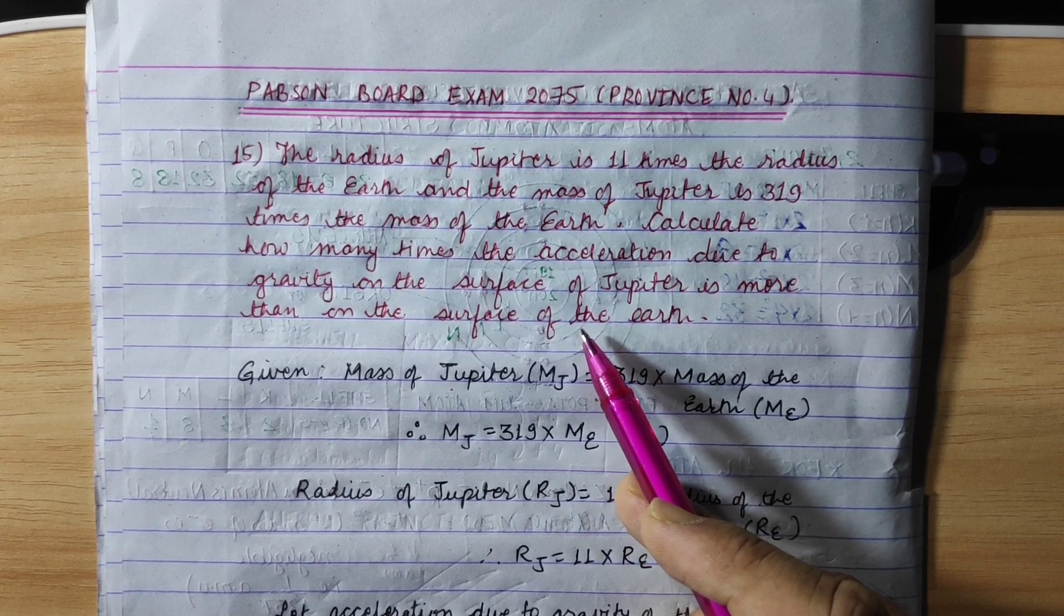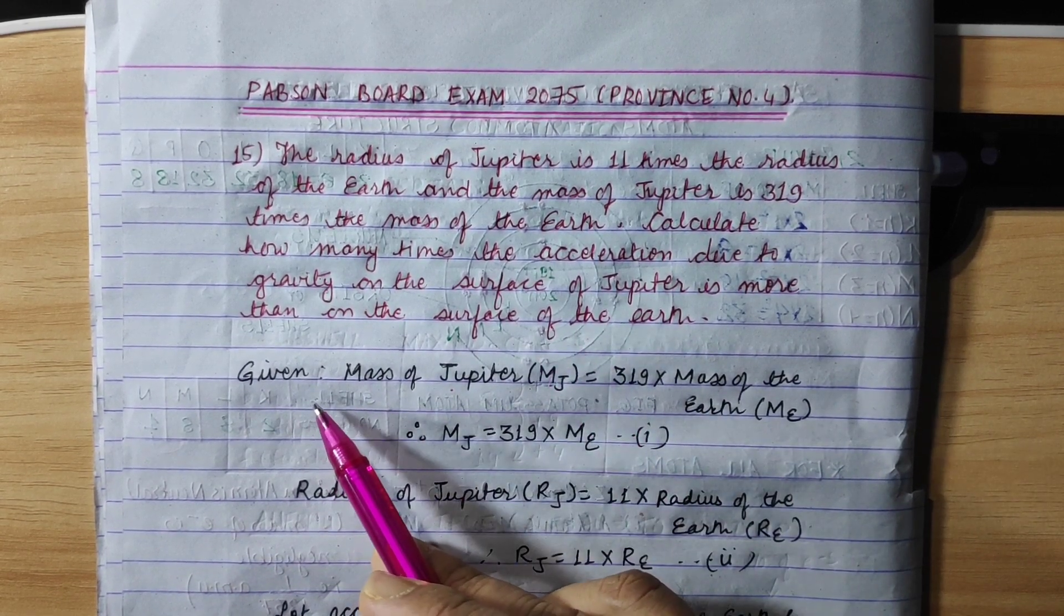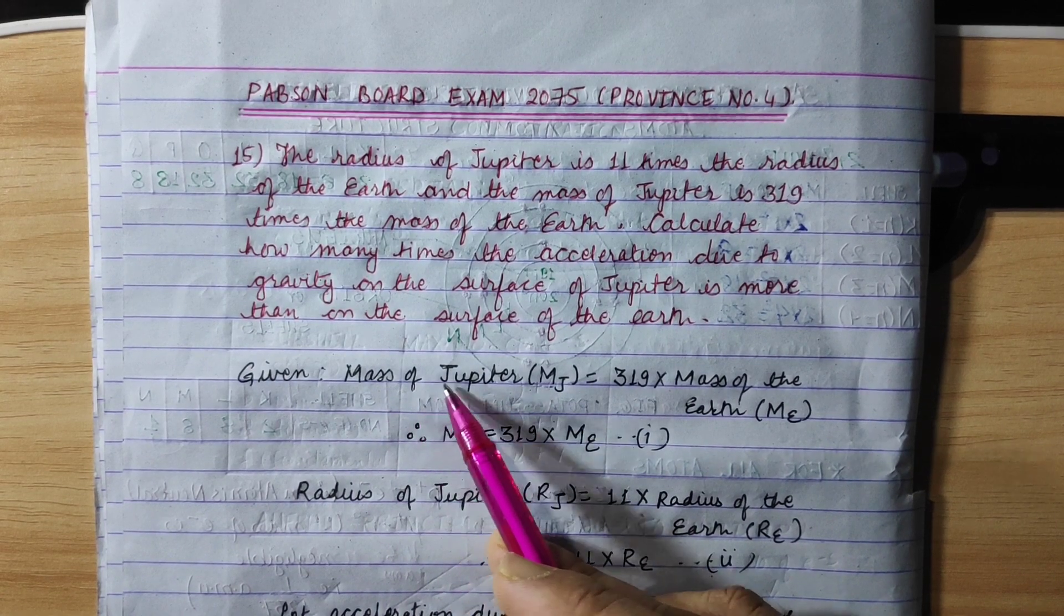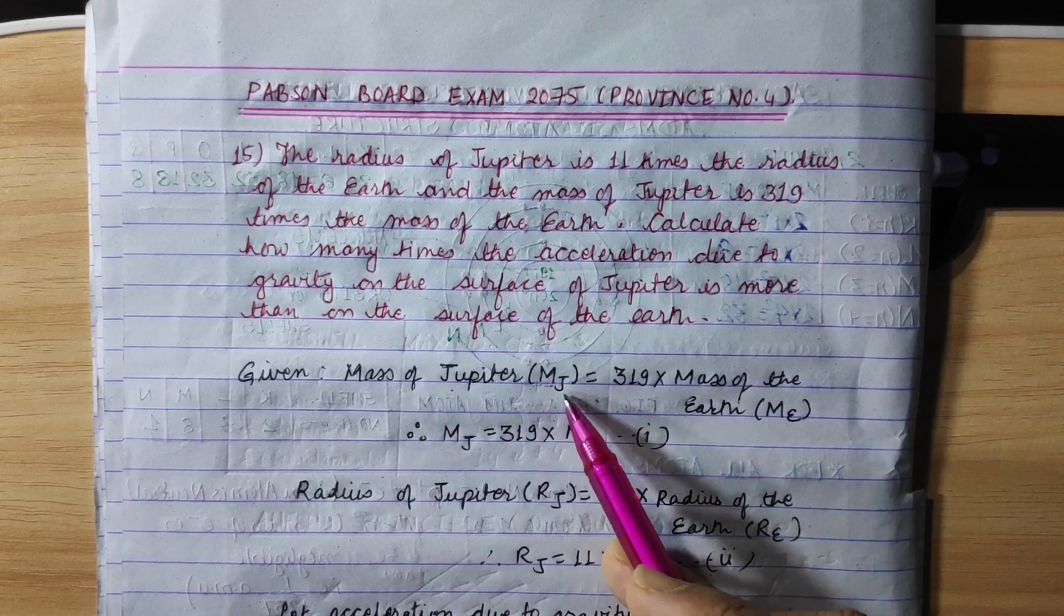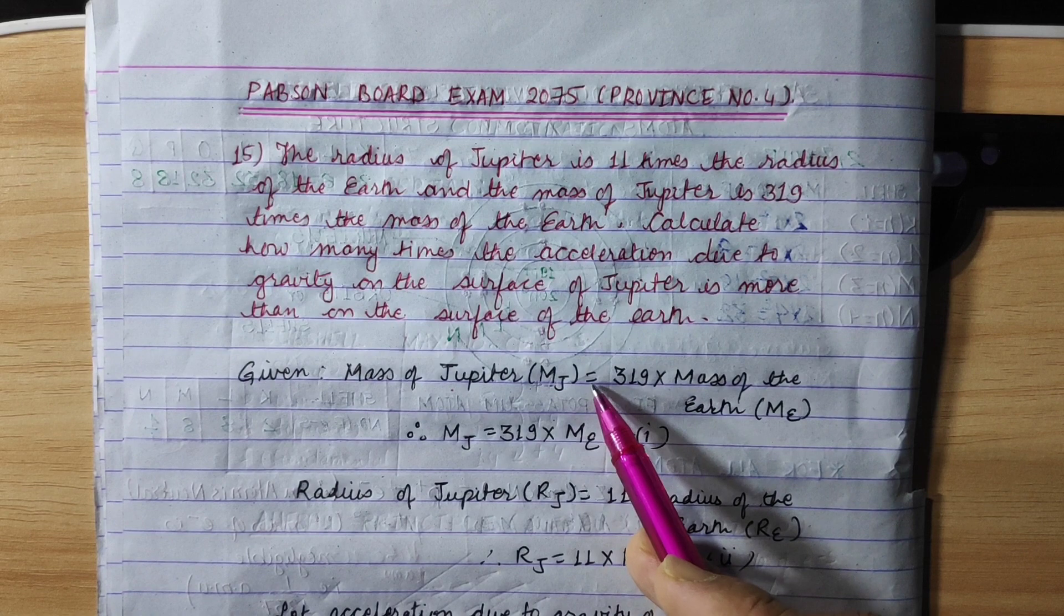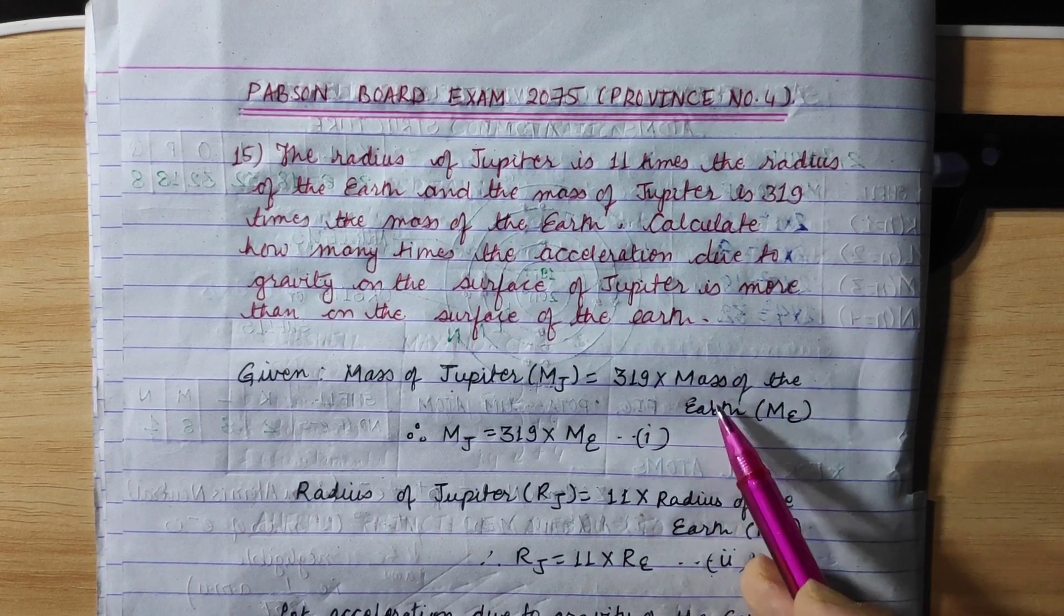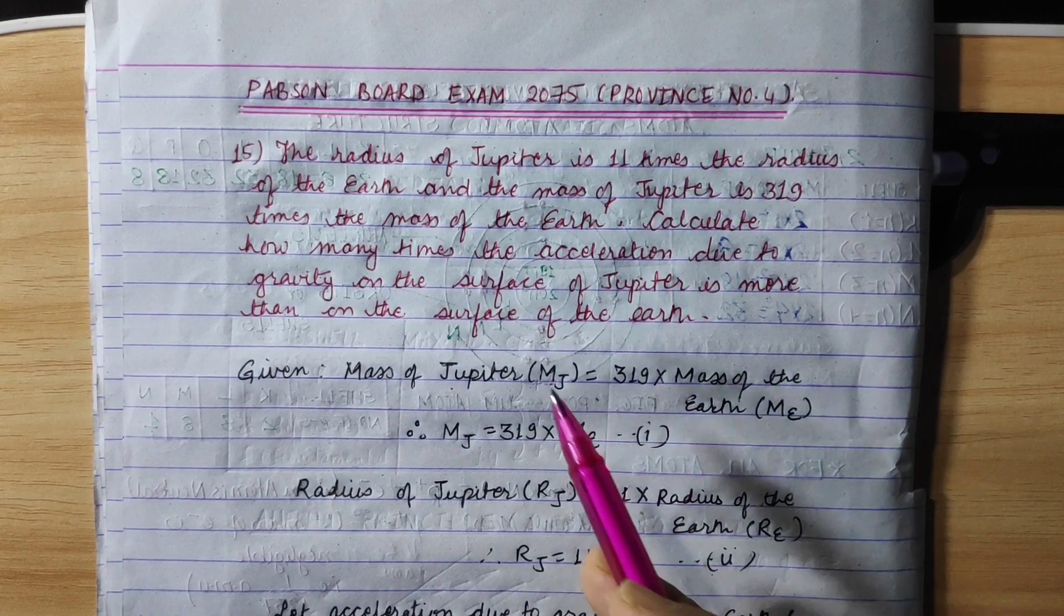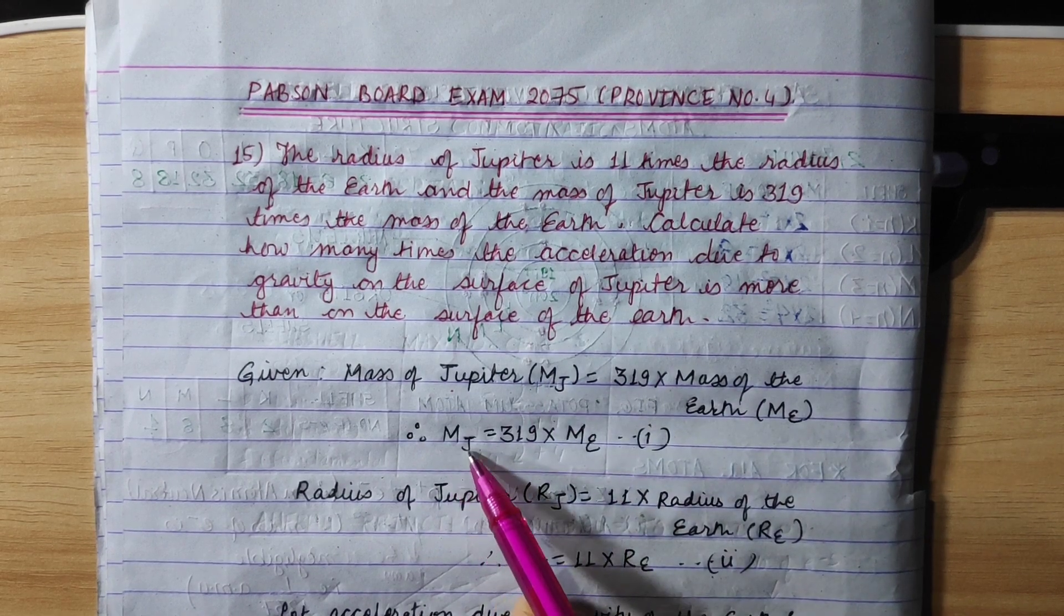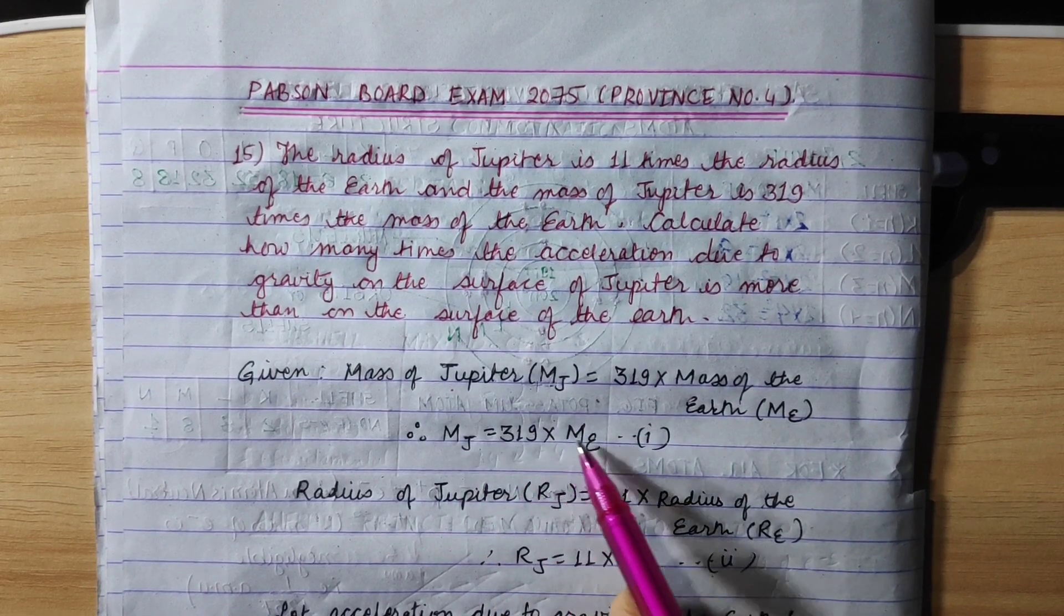Now, let's look at this. Given, we can see that the mass of Jupiter is 319 times the mass of the Earth. So Mj equals to 319 into Me.